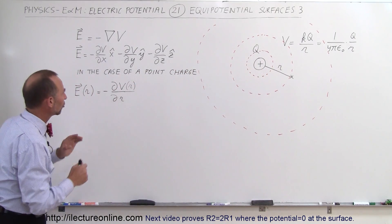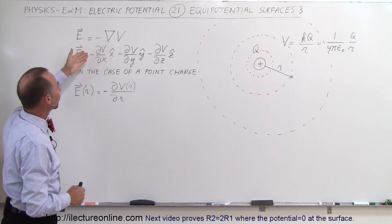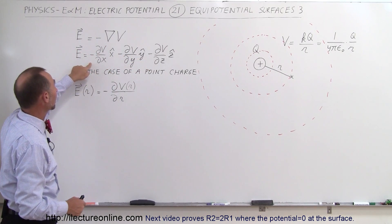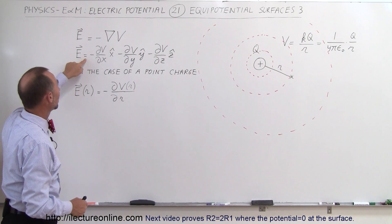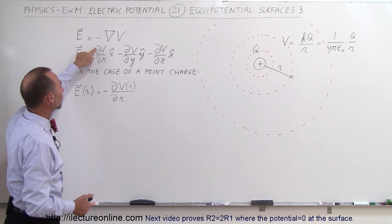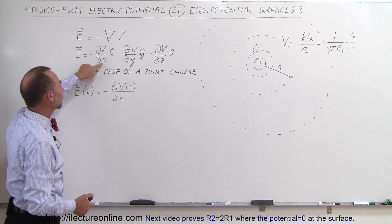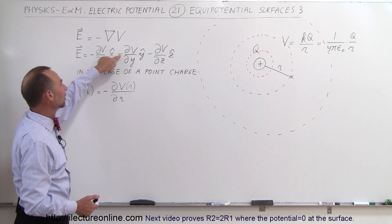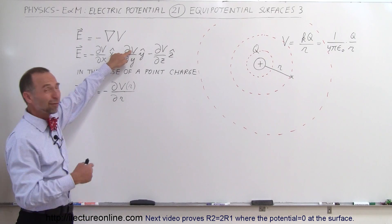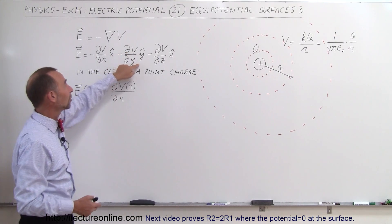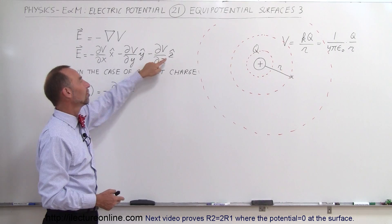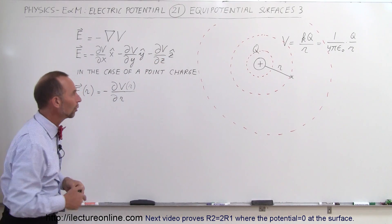The gradient in terms of x, y, z can be represented like this: the electric field equals the negative derivative of the potential with respect to x in the x-direction, plus the negative derivative with respect to y in the y-direction, and the negative derivative with respect to z in the z-direction — that is in Cartesian (x, y, z) coordinates.